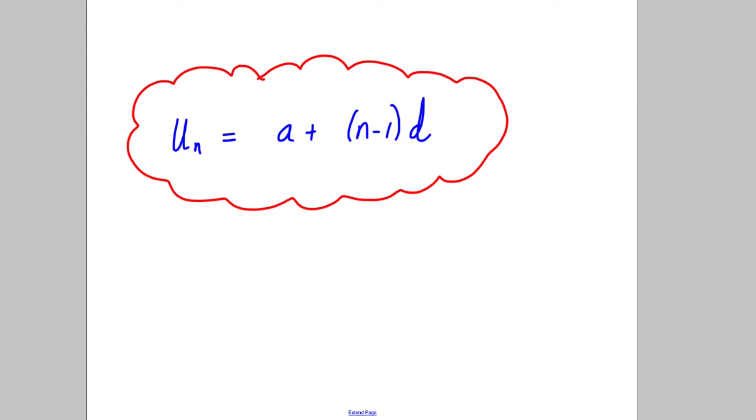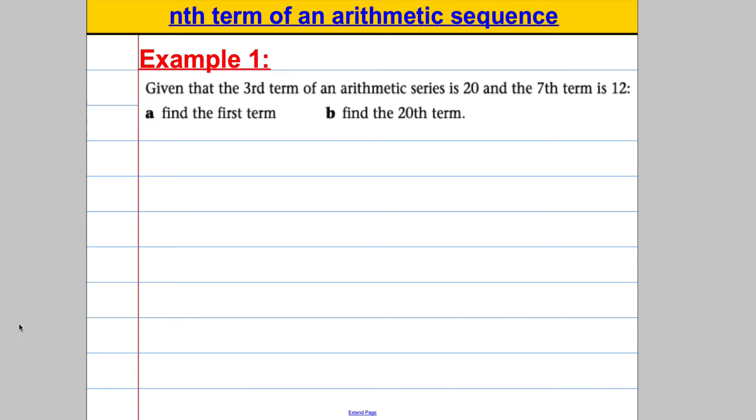Okay, let's have a go at this more complicated example. Let's work through this together. Given that the third term of an arithmetic sequence is 20, so they are telling us that the third term is 20, not the sum to the third term, just the third term is 20, and the seventh term is 12, we are asked to find the first term and the 20th term.